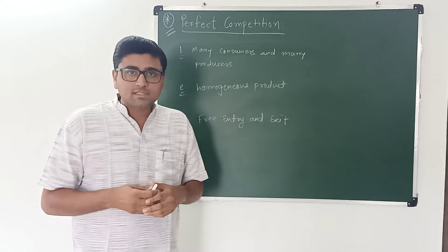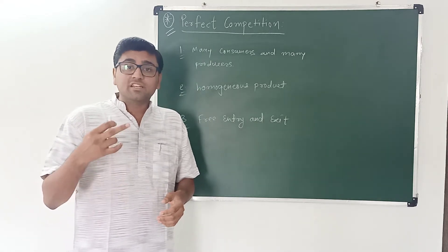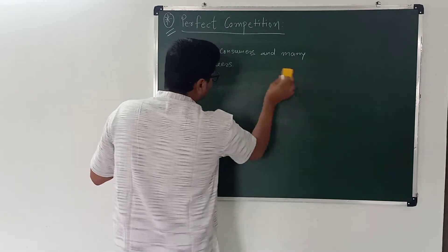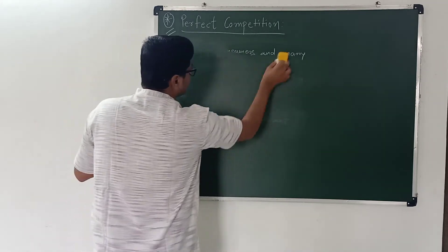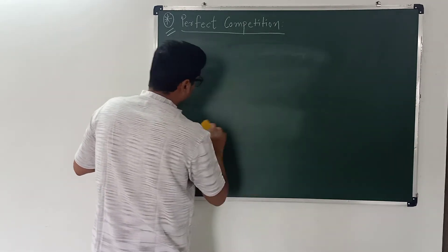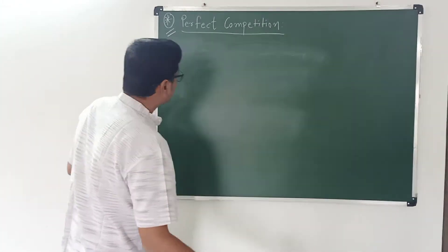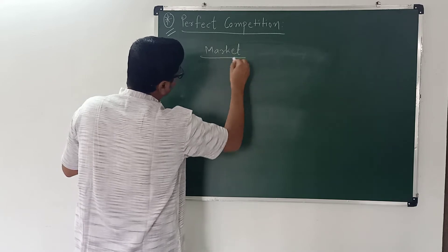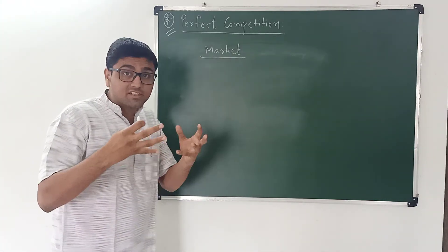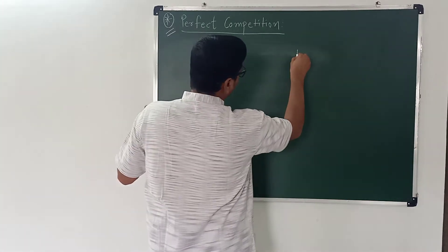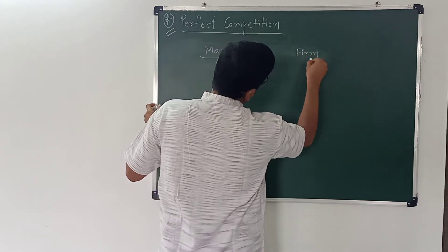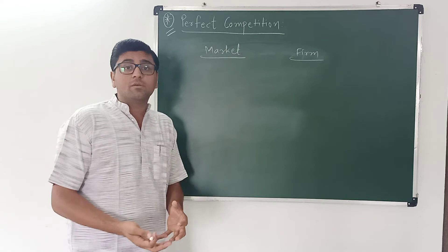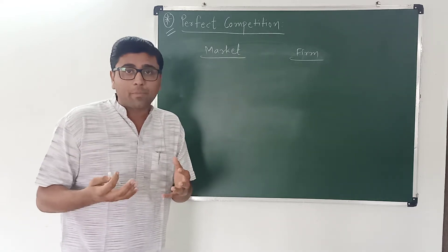Now I am going to discuss how price is determined in the market. We know that there are many consumers and many producers in the market. First we look at how price is determined in the market, and then what is the equilibrium price for a perfectly competitive firm.